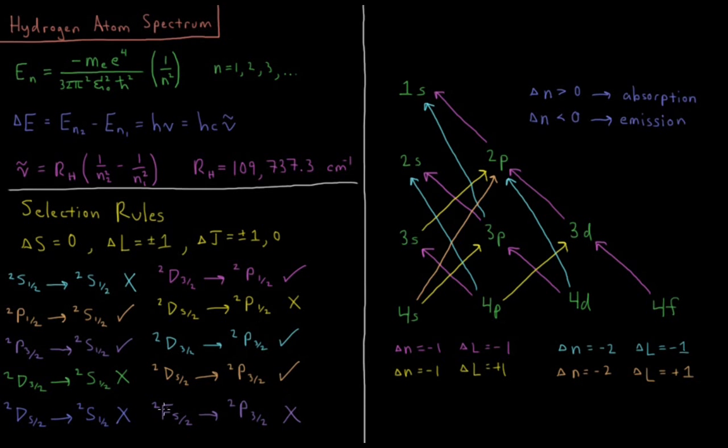And then anything going from an F to a P would not be allowed. Even though that's an allowed value of J, that is not an allowed value of delta L, being delta L equals minus two. So these are just a few of the kinds of transitions that are allowed between hydrogen atom energy levels. We mostly take a look at our selection rules for whether our change in S, L, and J are allowed. If they are, we can calculate the energy change by looking at the principal quantum number and calculating that from the Rydberg formula for getting the inverse wavelength of the photon, which is absorbed or emitted during that transition.